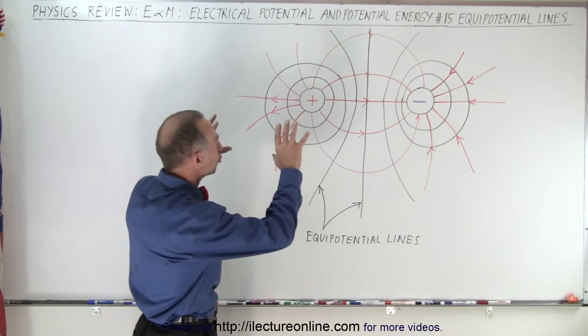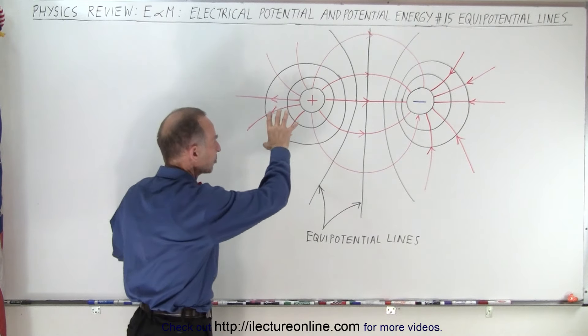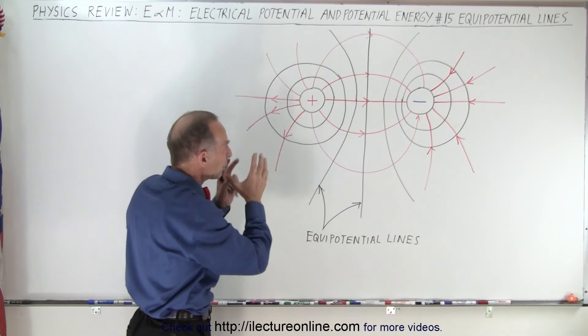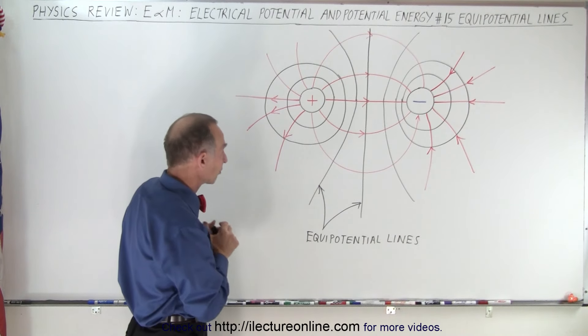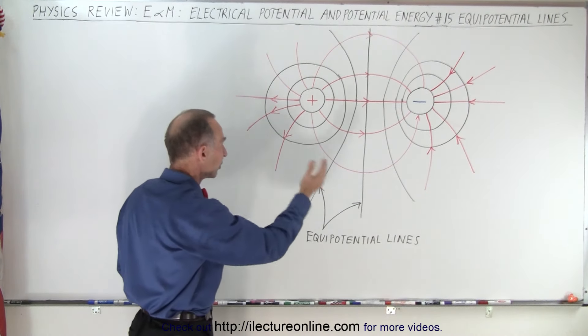And we've also drawn two charge objects, one that's positively charged, one that's negatively charged, and we've drawn in the red lines the electric fields, and of course the arrows pointing in the direction of the electric field which is from positive to negative.